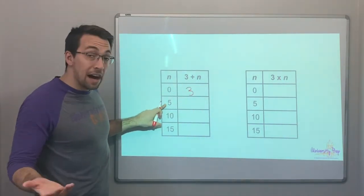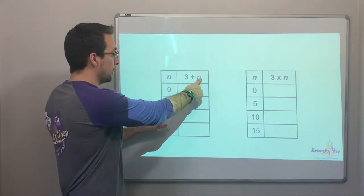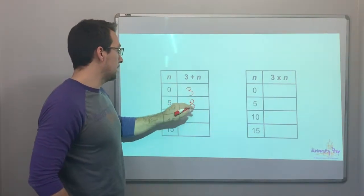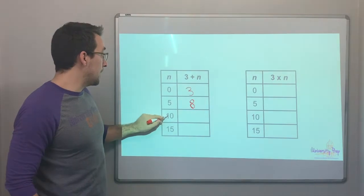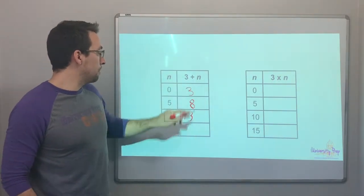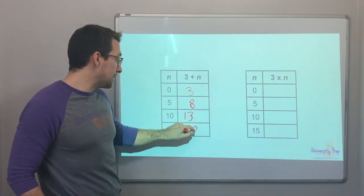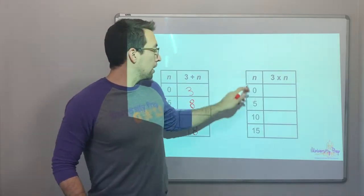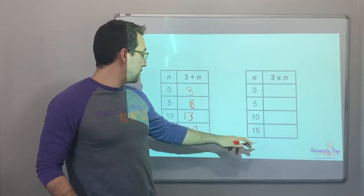Well, n is five. What's three plus five? That's eight. Three plus ten is thirteen. Three plus fifteen, that would be eighteen. And here, look, n is zero, five, ten, fifteen, twenty. Same thing.